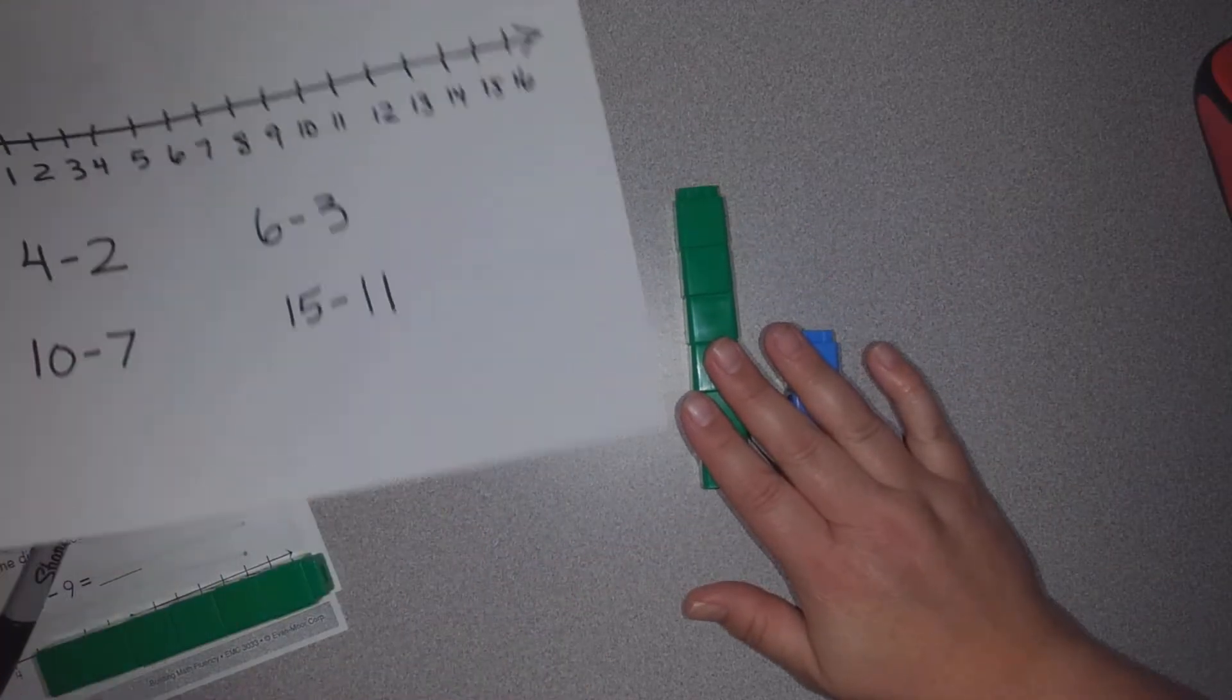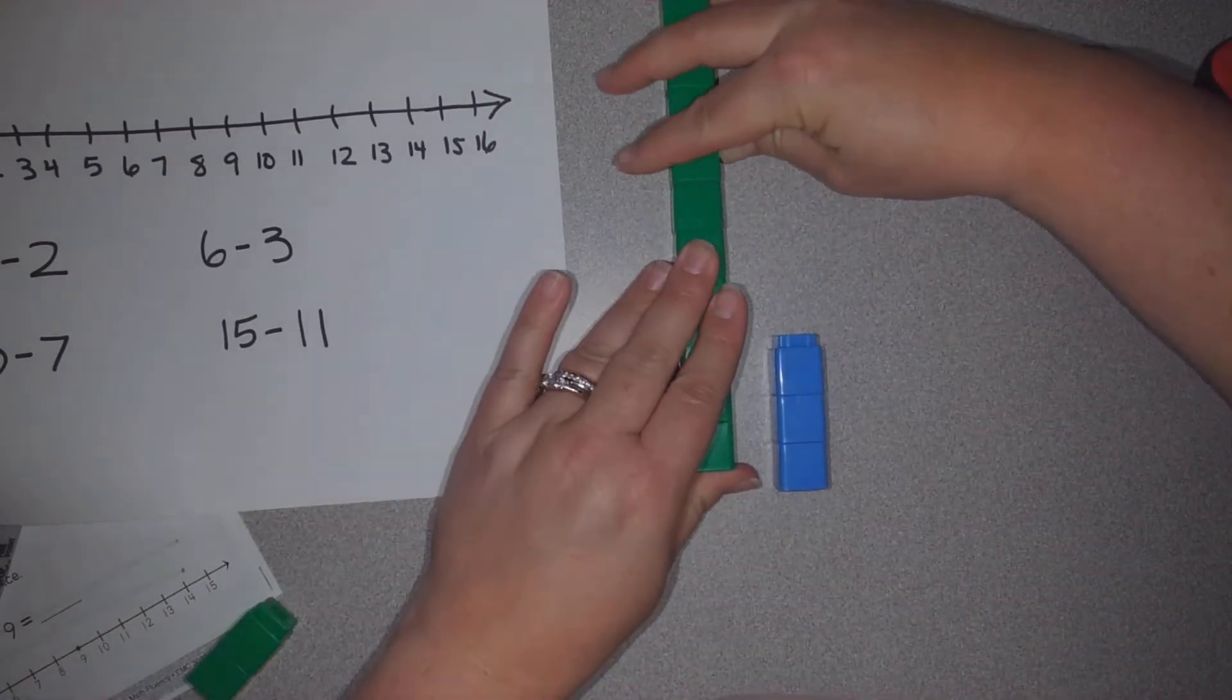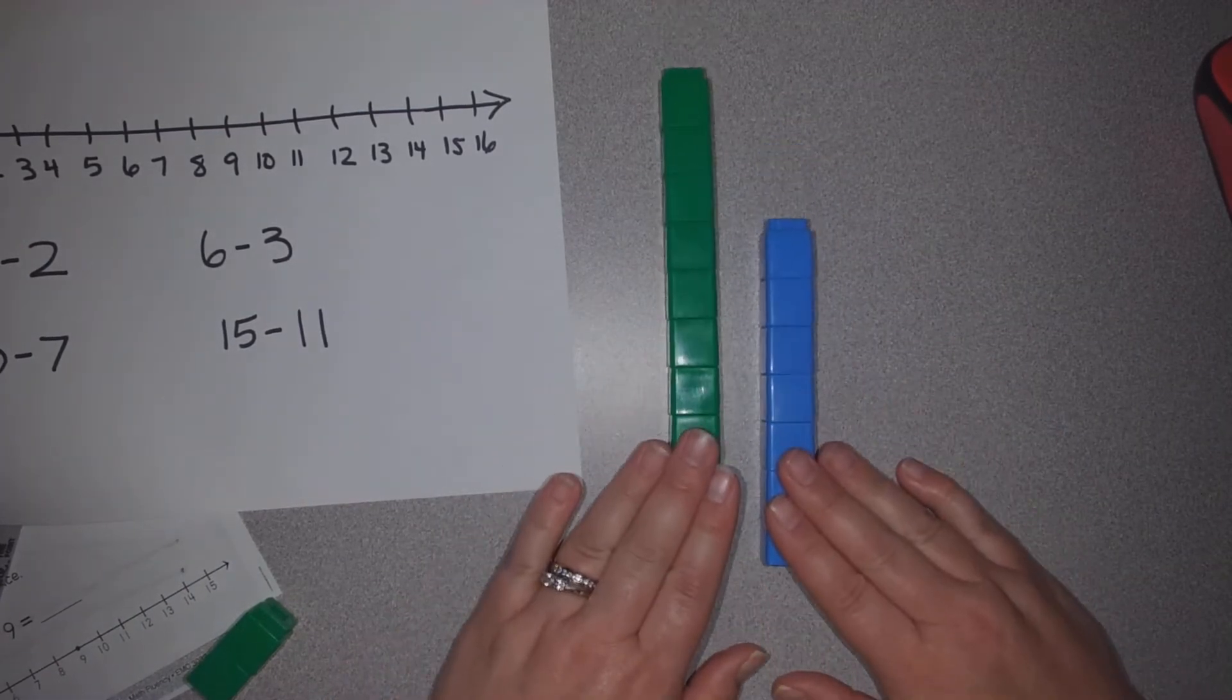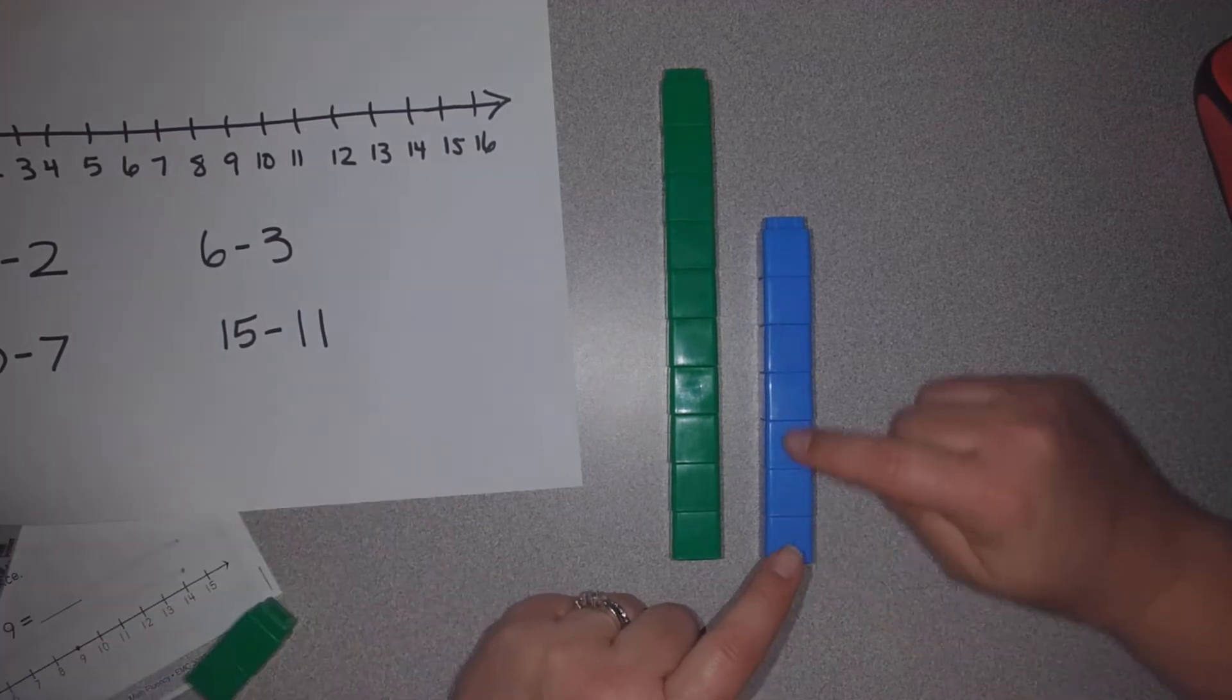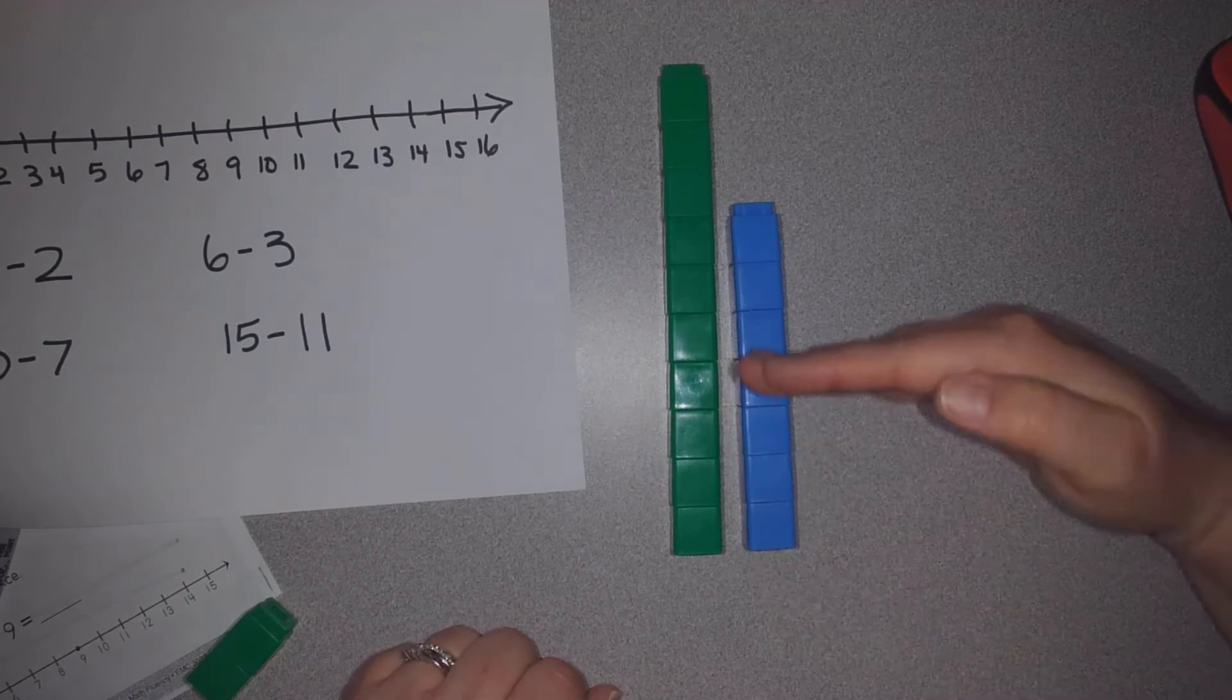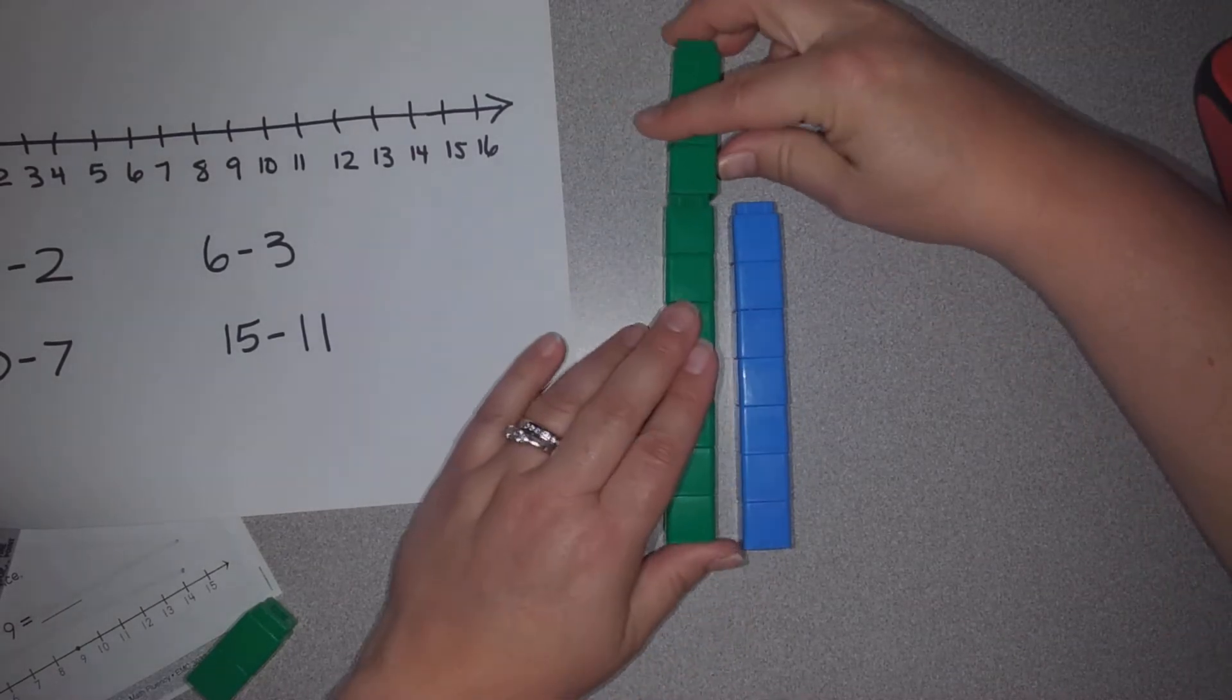I'll try one more here. 10 minus 7. So let's see, 2, 4, 6, 9, 10. And here's 7. Sometimes when we're subtracting we say, what's the difference? Well here's 7 and here's 10. Can you tell me what the difference is? This part is the same. This part is the difference. It's 3.